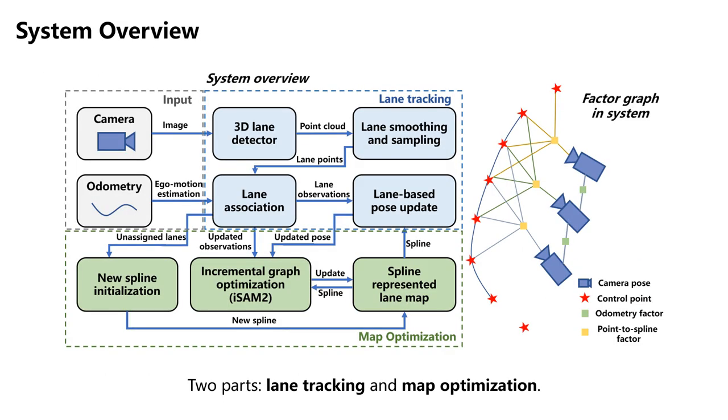This diagram showcases the overall architecture of our system. You can consider our system as a curve feature-based VSLAM, visual simultaneous localization and mapping, system. Similar to classical point-based VSLAM systems, our system is divided into a front-end and a back-end, which respectively handle lane tracking and map optimization.